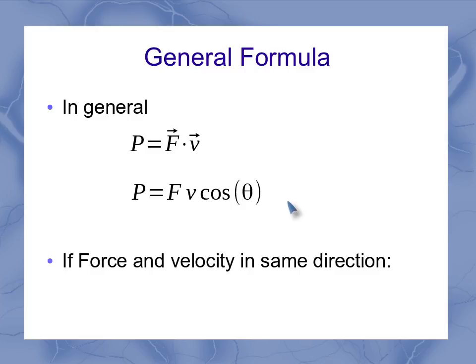If my force and velocity are in the same direction, and that happens quite a bit, that means my angle is 0, and so the cosine of theta is 1. And I could simplify my equation down here to be the power is just the force times the velocity.